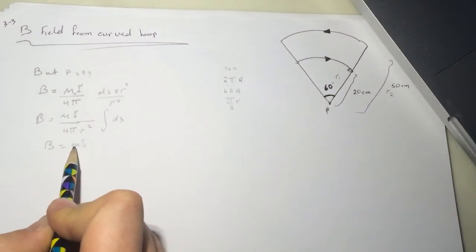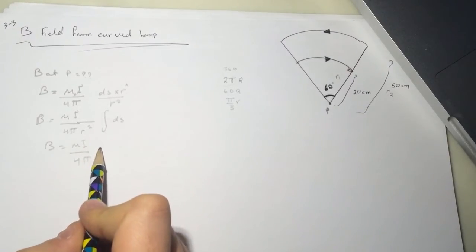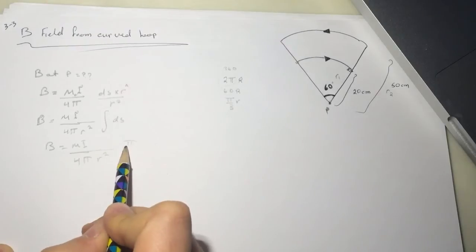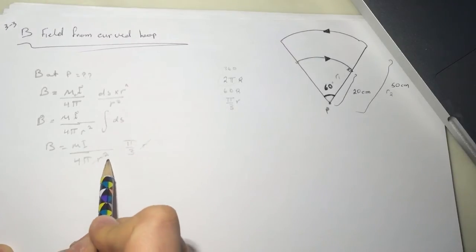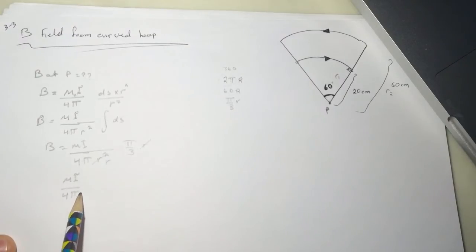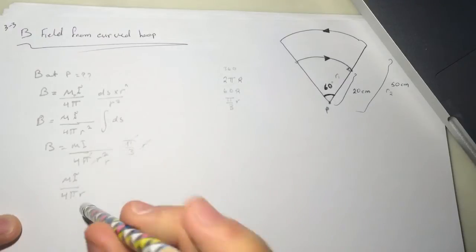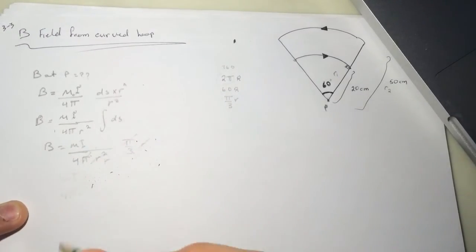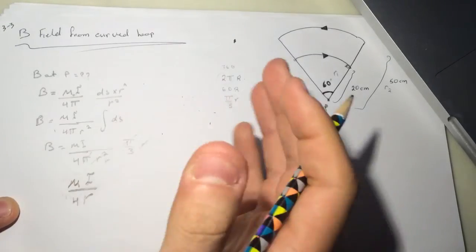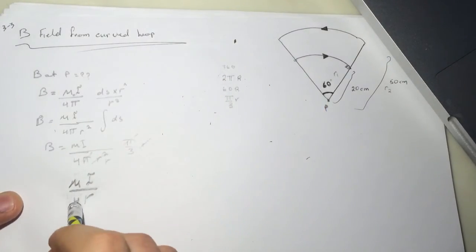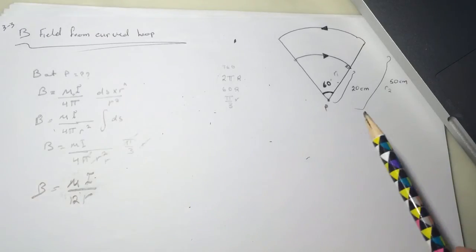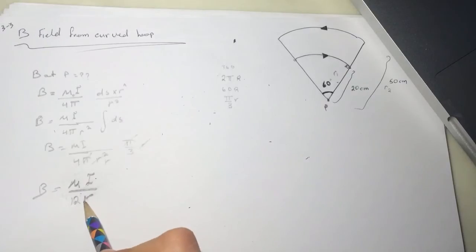For 60 degrees, the arc length is R times pi over 3. So the magnetic field B equals uI over 4 pi R squared, times pi over 3 times R. Simplifying, the R's cancel and we get B equals uI over 4R times 3, which gives uI over 12R.